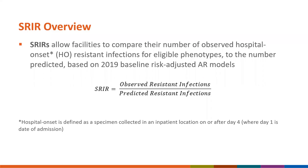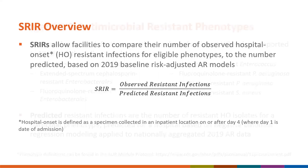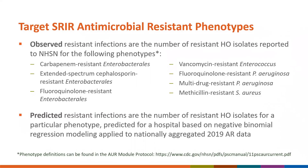SRIRs allow facilities to compare their number of observed hospital onset resistant infections for eligible phenotypes to the number predicted based on 2019 baseline risk-adjusted AR models. The SRIR is calculated as the number of observed resistant infections divided by the number of predicted resistant infections. Observed resistant infections, the numerator of the SRIR, are the number of resistant hospital onset isolates reported to NHSN for one of the following phenotypes.